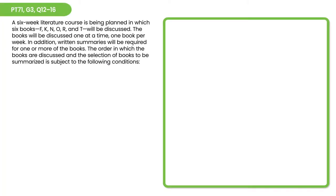Let's take a look at an example. Hit pause and try to come up with a game board you could use to track the information and create a valid hypothetical. Hit play again when you think you have something. Welcome back. We're being asked to take a six-week literature course and plan which six books — F, K, N, O, R, and T — are going to be discussed in what order. The books will be discussed one at a time, one book per week. This is one-to-one ordering, so we create a game board with six spots for the six players.